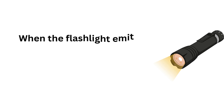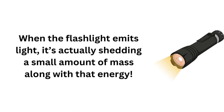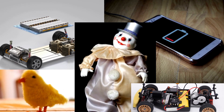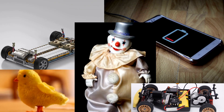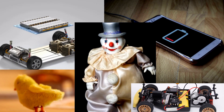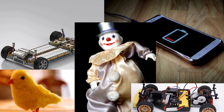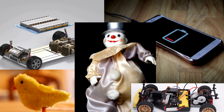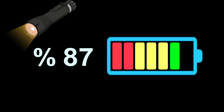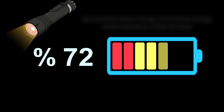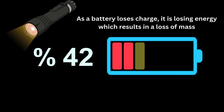So when the flashlight emits light, it's actually shedding a small amount of mass along with that energy. Think about it — every time we use batteries, whether in toys, remote controls, or our flashlights, we're not just using energy; we're also experiencing a minute change in mass. It's a neat reminder of the interconnectedness of energy and mass in our universe. So the next time you flick on a flashlight, remember: you're not just illuminating the room, you're also engaging in a fascinating dance of energy and mass.